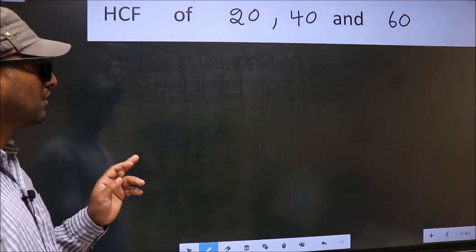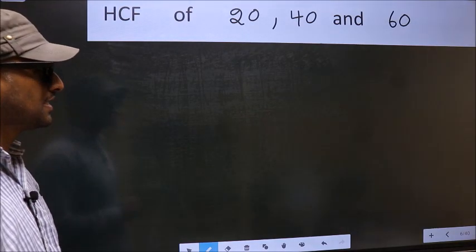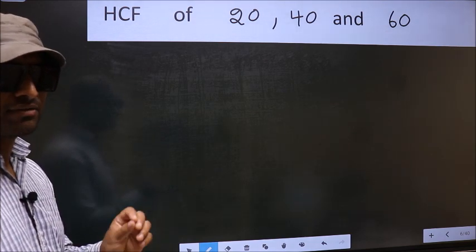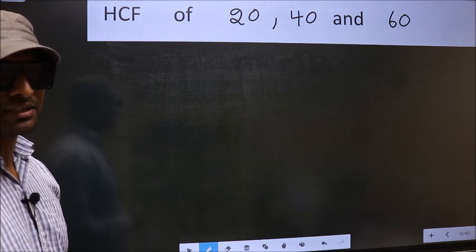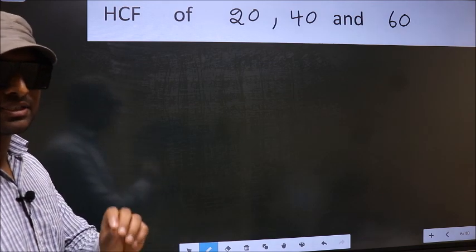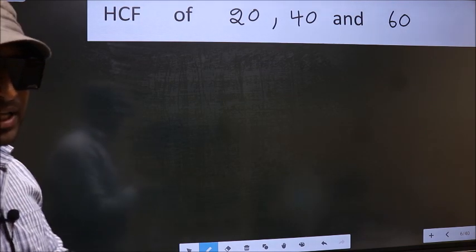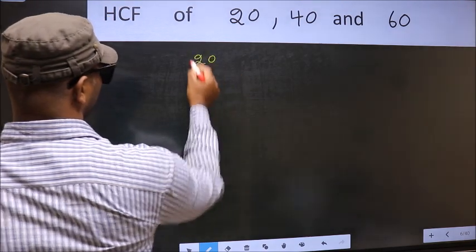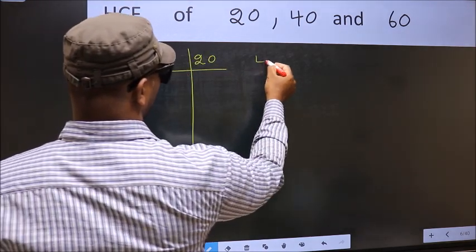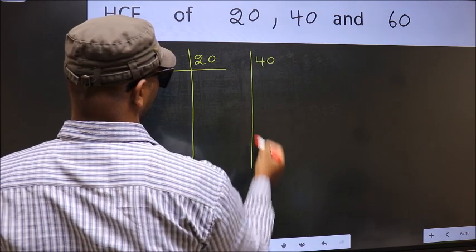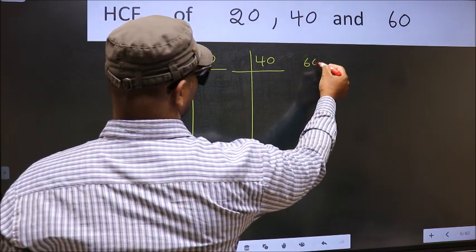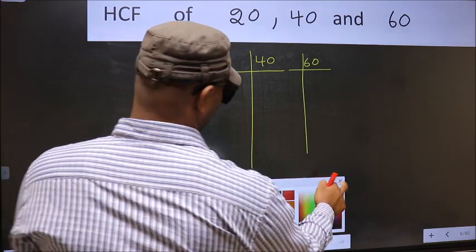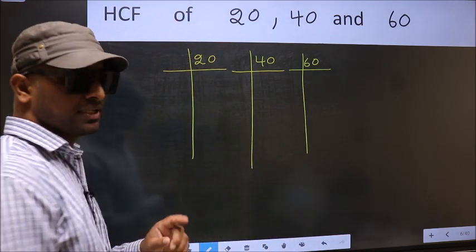HCF of 20, 40 and 60. To find the HCF, we should do the prime factorization of each number separately. What I mean is 20, 40, 60. This is your step 1.